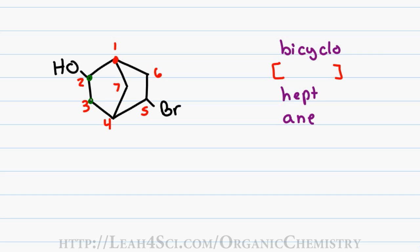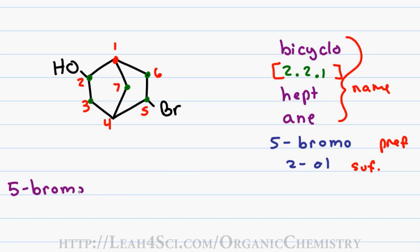I have two carbons unique to the ring portion with the OH, giving me 2. I have two unique carbons to the portion with the Br, giving me .2 and one carbon on the bridge giving me .1. Bromine is my prefix which gives me 5-bromo and OH is my suffix giving me 2-ol. Putting the name together, we start with the prefix, then we have the name and finally we have the suffix. Putting the entire name together, I get 5-bromo bicyclo 2.2.1 heptane 2-ol.